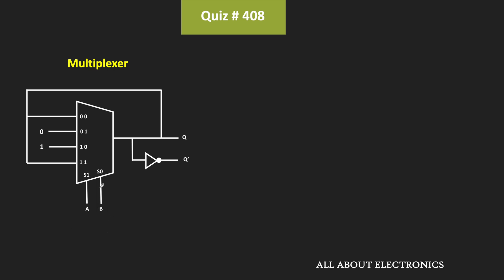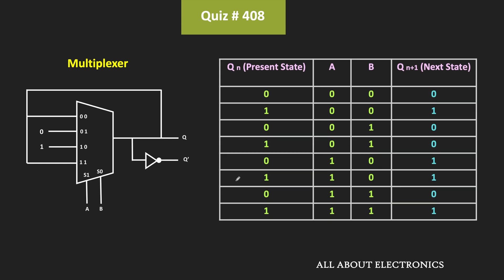Whenever both inputs A and B are 0, the first input line will get selected. When both inputs A and B are 0, the first input will get connected to the output, and the output will be the same as the first input. There is a feedback from the output to the input side, meaning this first input line is equal to Q. So presently, if qn equals 0, then qn+1 will also remain 0, and if Q equals 1, then in the next state the output will remain 1.